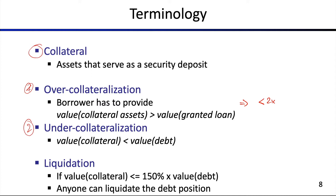Under-collateralized loans allow you to borrow more than what you actually have. So the collateral value here can be inferior to the debt value that you take on, and this also means that you can have leverage beyond 2x in general.